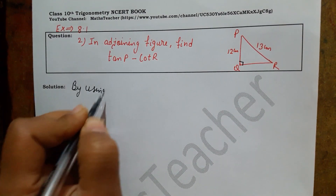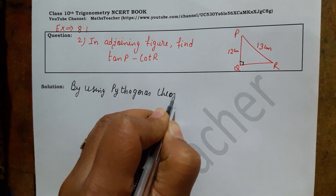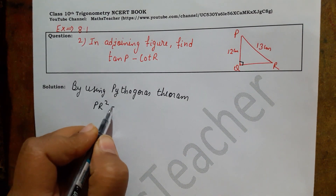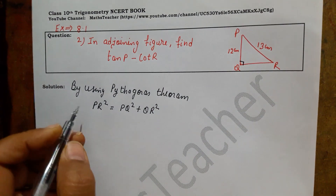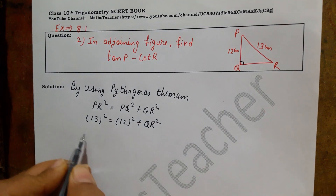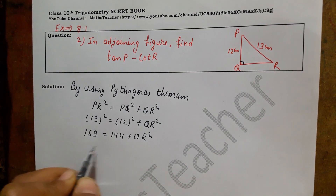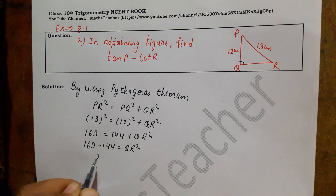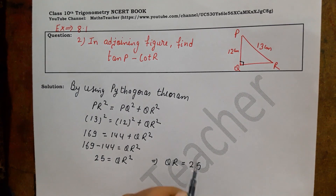Since it is a right angle triangle, we use the Pythagorean theorem. In triangle PQR: hypotenuse squared equals perpendicular squared plus base squared. PR is 13, PQ is 12, so 13 squared equals 12 squared plus QR squared. That gives 169 equals 144 plus QR squared, so QR squared equals 169 minus 144 equals 25, therefore QR equals 5.